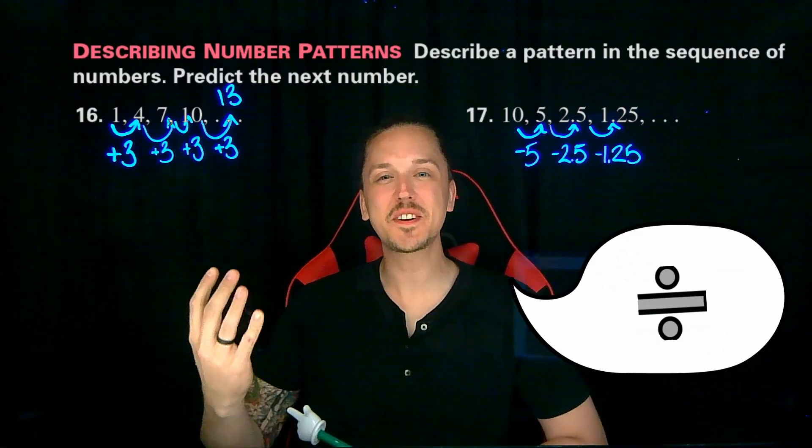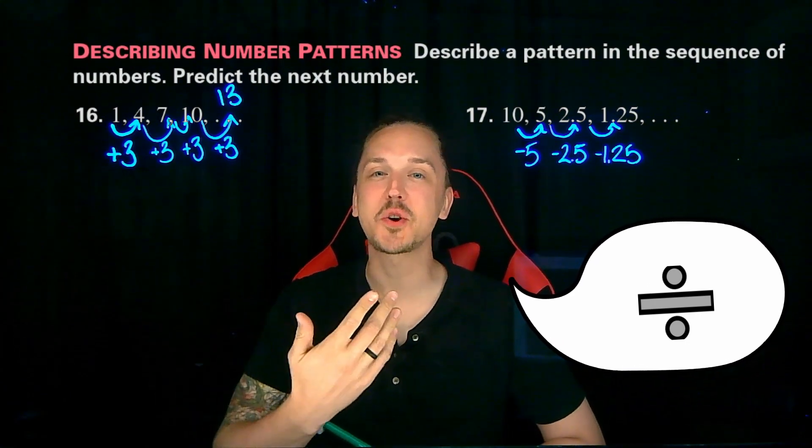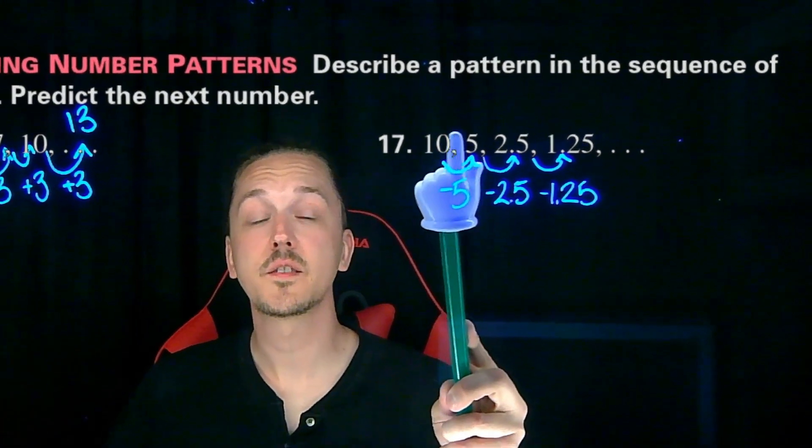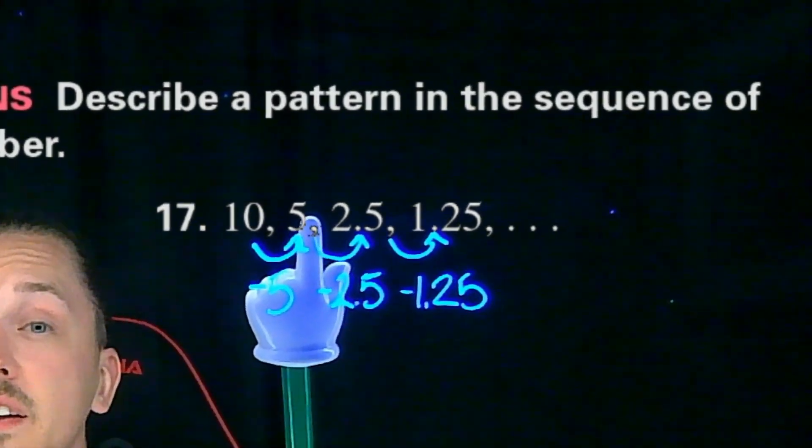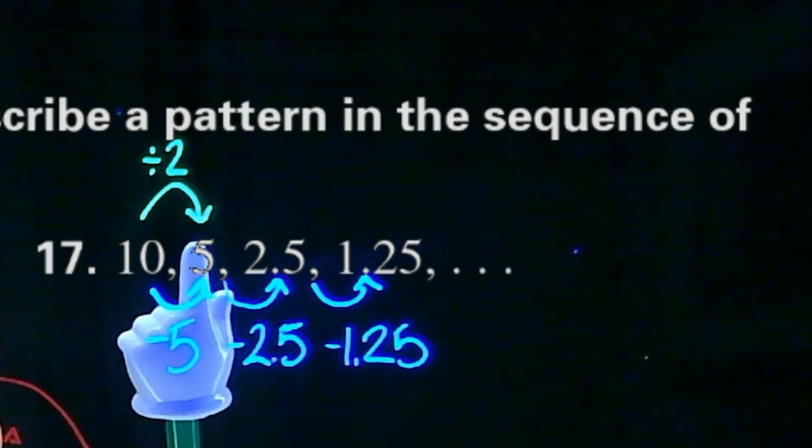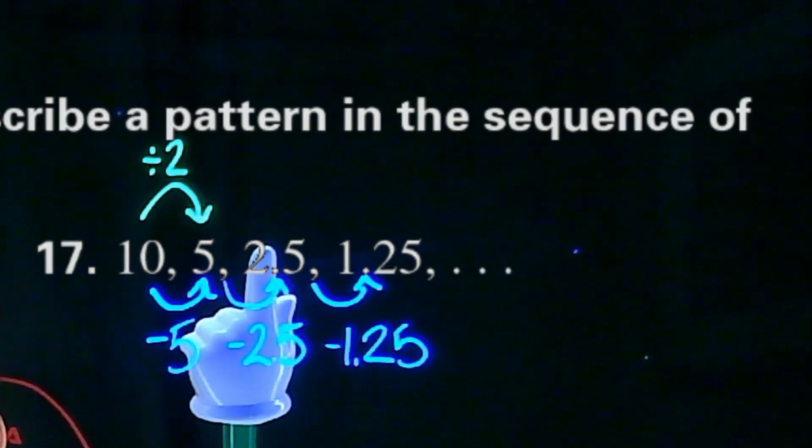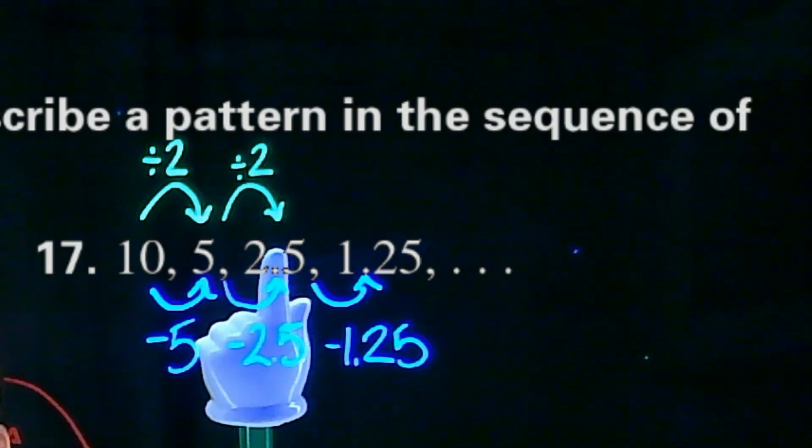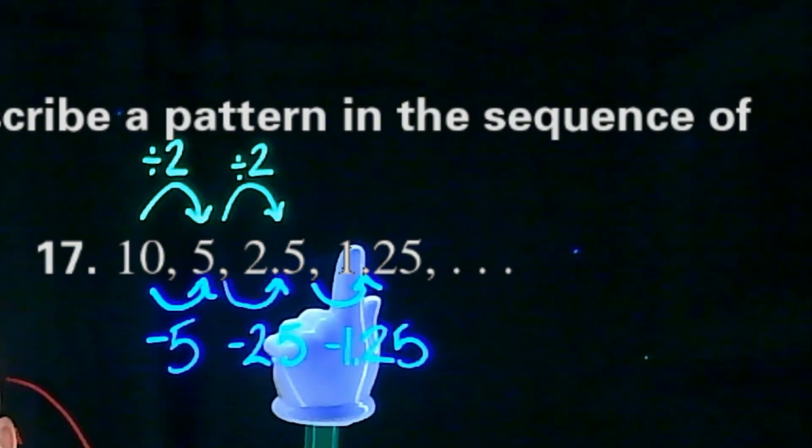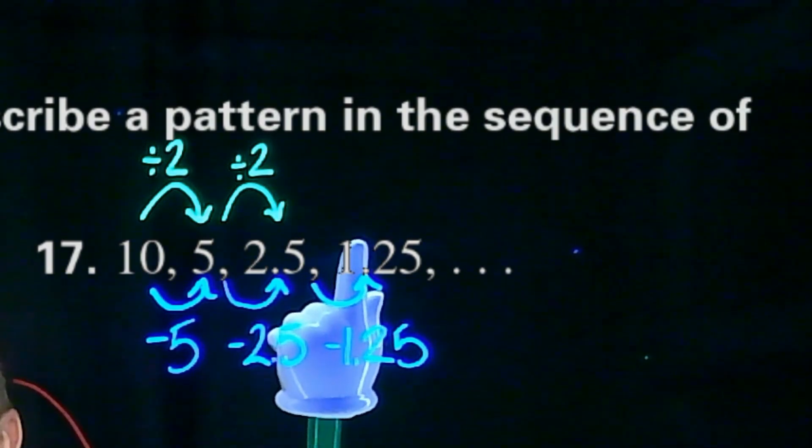Yeah, what about division? Division can be used to make a number smaller. Let's try it. To go from 10 to 5, we will divide by 2. To go from 5 to 2.5, we will also divide by 2. To go from 2.5 to 1.25, we will also divide by 2.